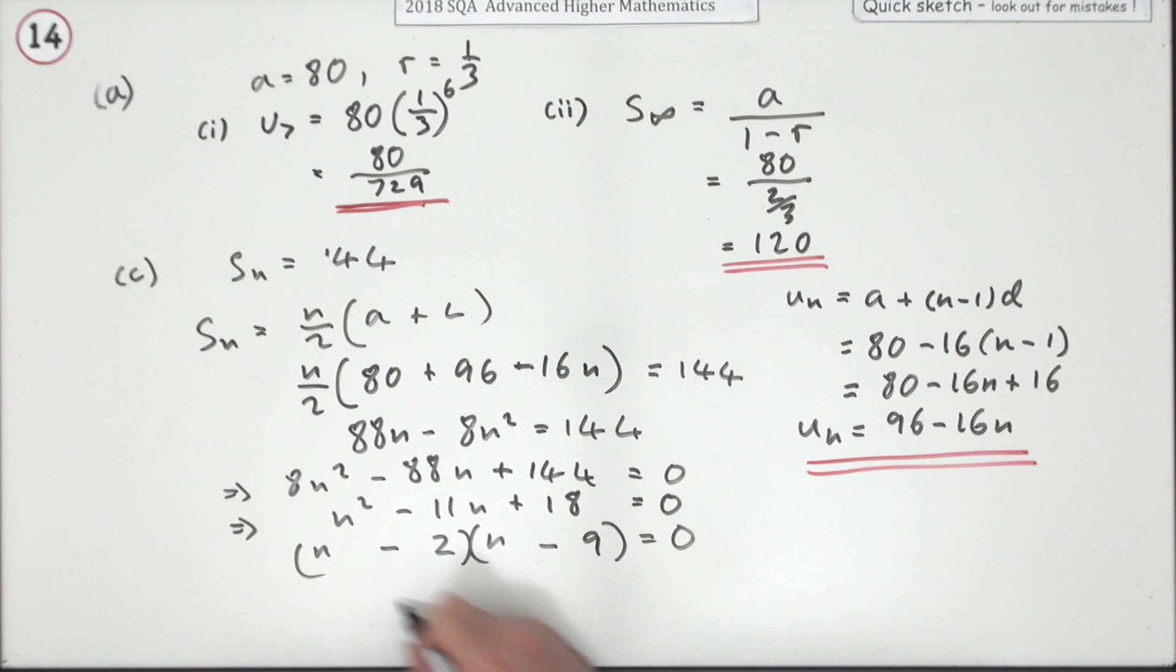Negative, but then they're both negative. So, n equals 2, n equals 9, are the values of n.